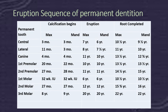There is a timetable for the eruption sequence of permanent dentition. The first permanent molar erupts at age 6, followed by the mandibular central, maxillary central, then mandibular and maxillary lateral incisors. From age 8 to 10 there is no eruption — this is called the silent period. After age 10, eruption of premolars in the maxillary arch and the canine in the mandibular arch occurs.